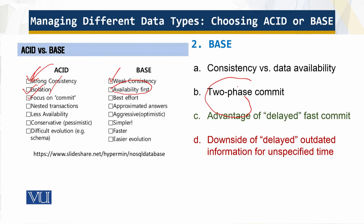The change is made locally but applied and confirmed to the client only when all other nodes are updated. BASE relaxes this requirement, requiring only a subset of the nodes holding the same data to be updated. The advantage is that transactions are committed faster — fast commit. The downside is that clients connecting to some read replicas may see out-of-date information for an unspecified period of time, like a new message on Facebook.